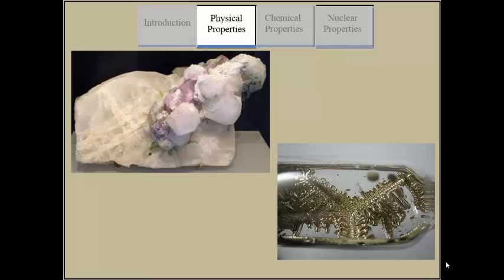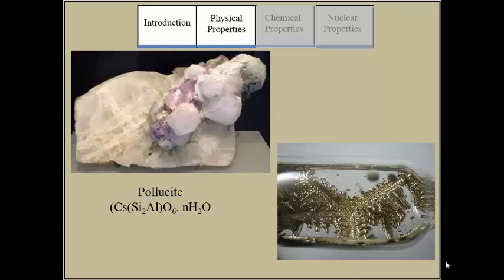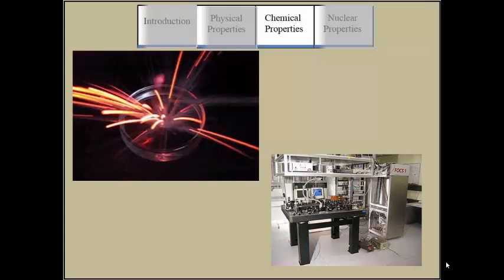Cesium's half-life ranges from 1 hour to 2.3 million years. Some of cesium's isotopes, such as cesium-135 and 134, have the longest half-lives, ranging from 2 years to 2.3 million years. All of cesium's other isotopes have a half-life that are less than 2 weeks or even an hour.